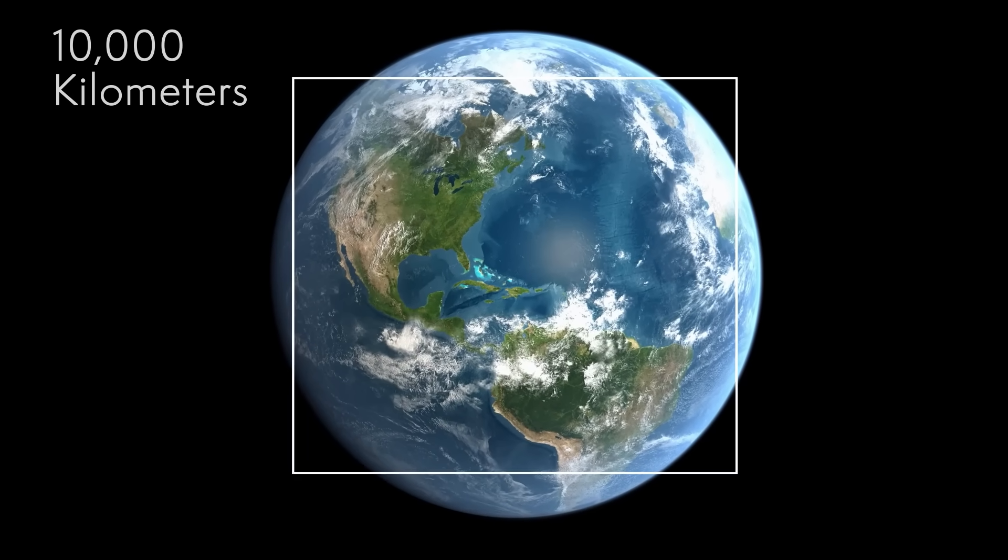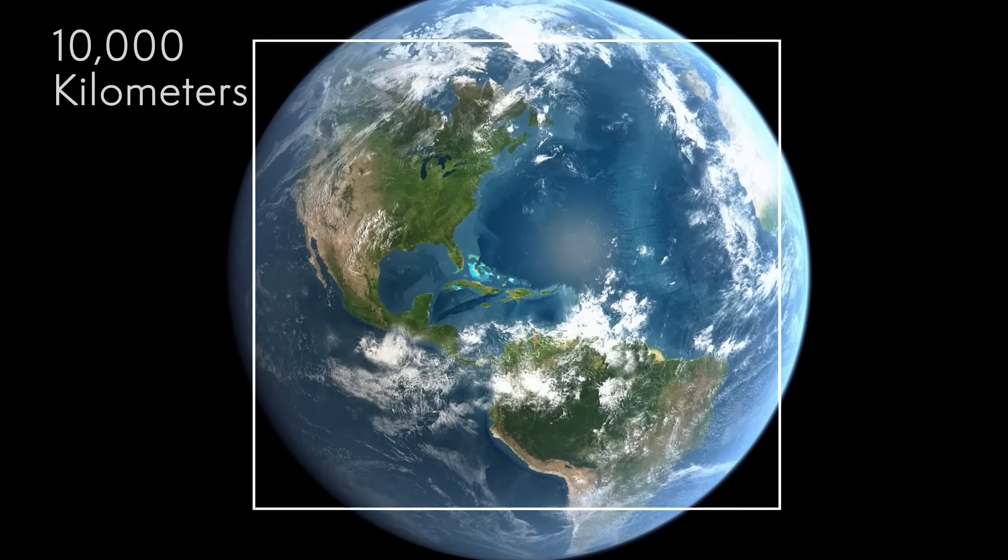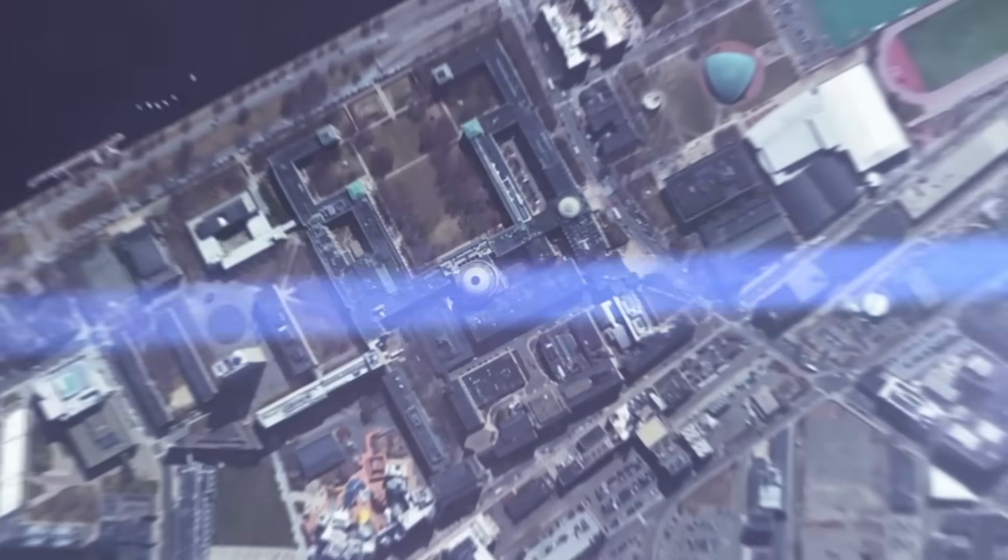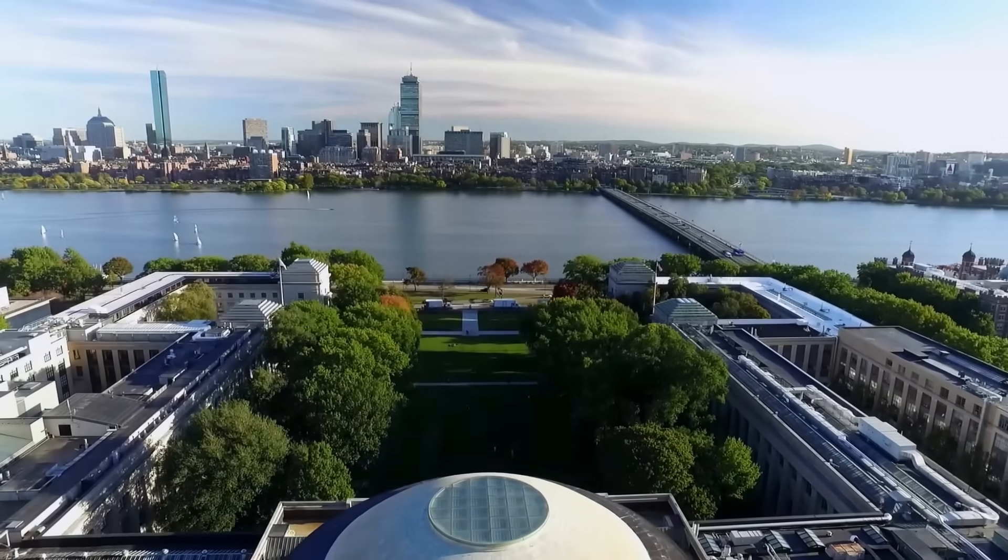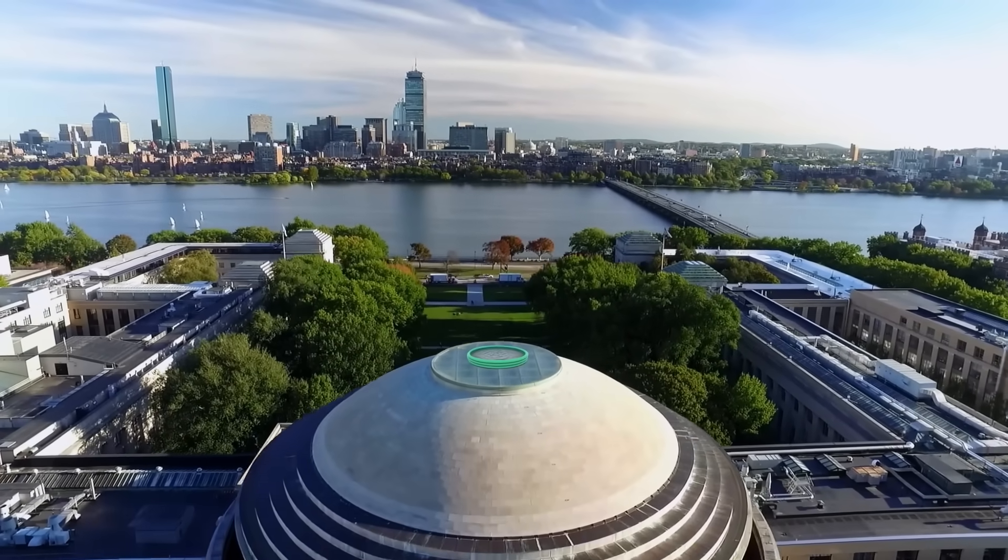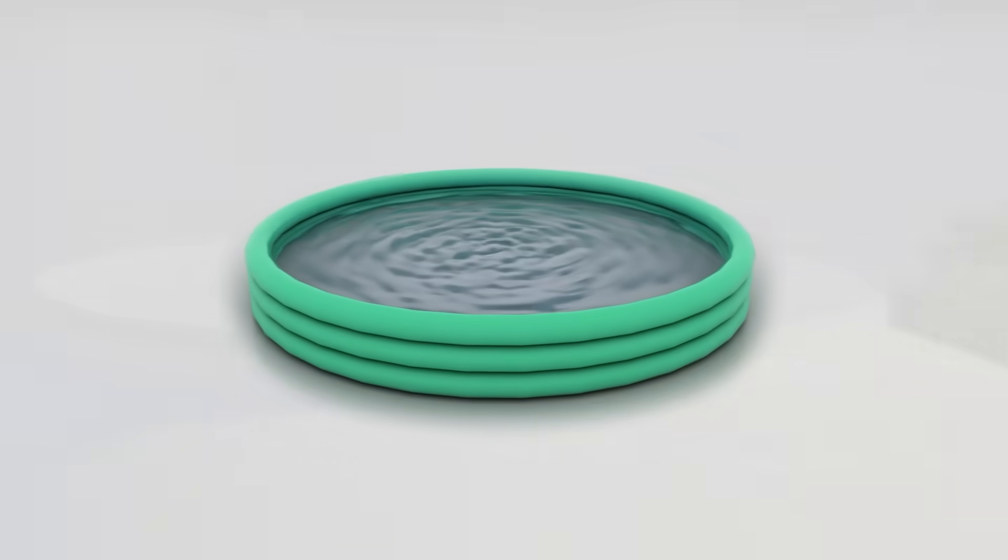The diameter of the Earth is 10,000 kilometers. Zooming in on Boston, the size of the MIT campus is one kilometer, four orders of magnitude smaller. Let's add a fictional child's pool of water on top of the MIT dome, with a scale of one meter.